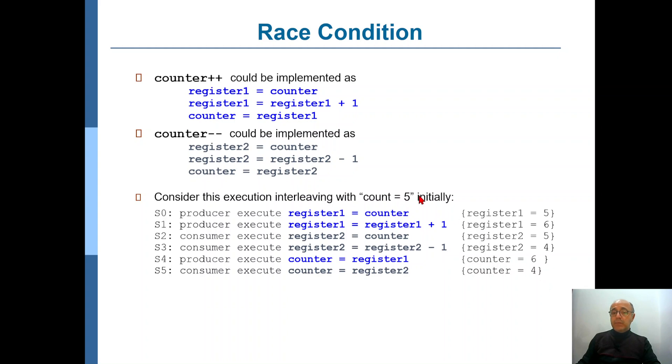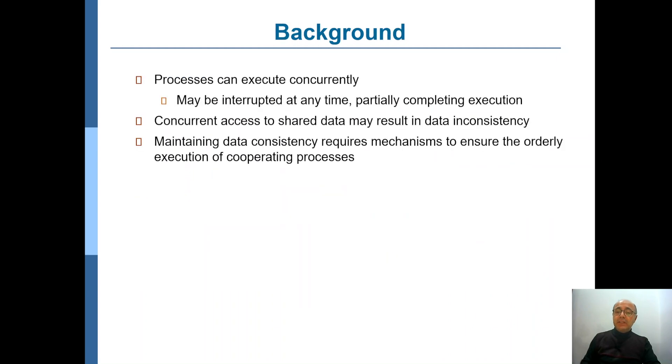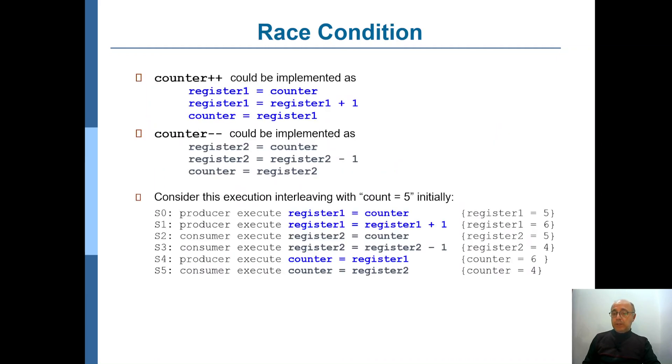Now, this is strange. It was five, you produce one, consume one, so it should still be five. But unfortunately, it's now four. This is the data inconsistency we were mentioning here. Because the data is now corrupted, it's not what it should be.